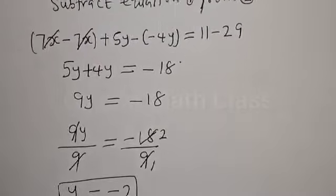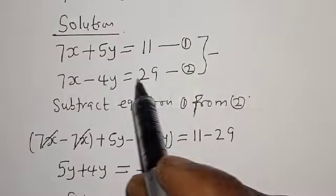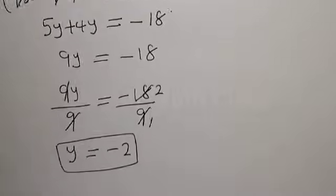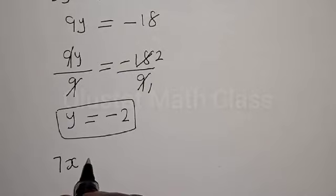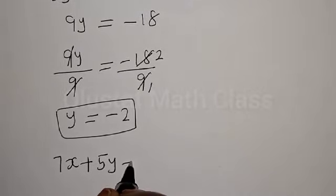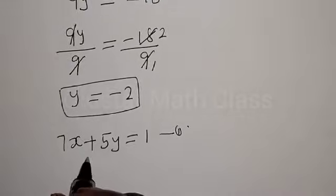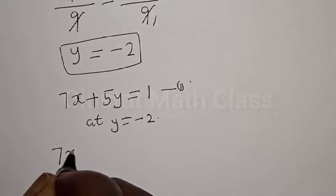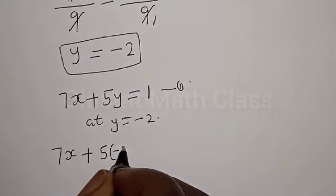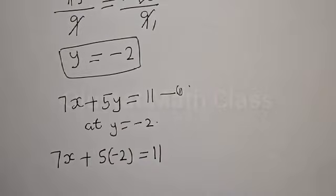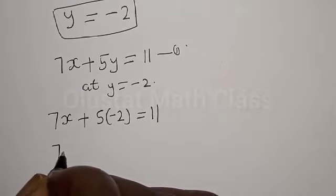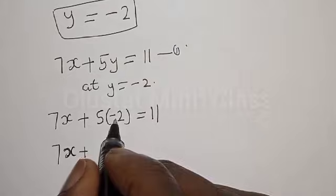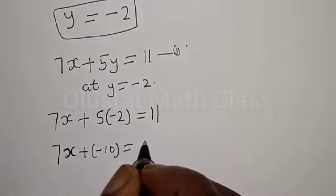We've gotten the value of y to be equal to minus 2. Now let's substitute for y in equation 1. Equation 1 is 7x plus 5y is equal to 11. At y equal to minus 2, we have 7x plus 5 times minus 2, which is minus 10, equal to 11.